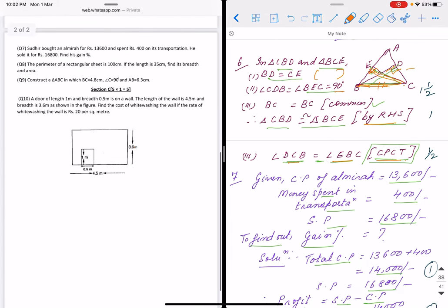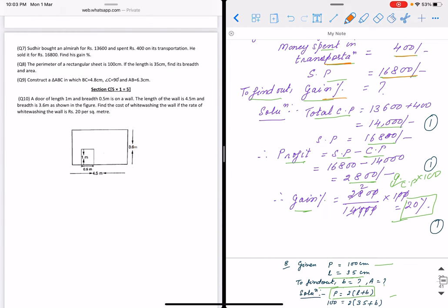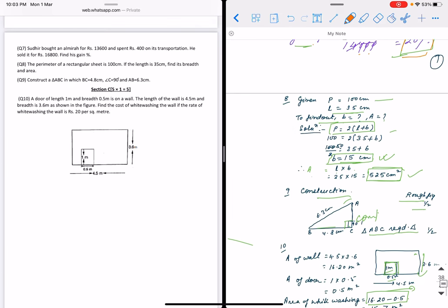Question number seven is profit and loss. CP of almira is 13,600 rupees, transportation is 400, so total CP is 14,000 rupees. SP is 16,800. We find profit first: SP - CP = 2,800 rupees. Gain percent formula is gain/CP × 100. We are getting 20%.